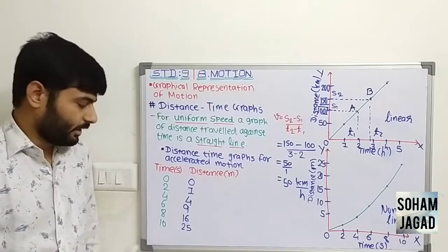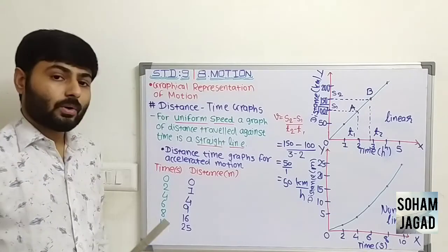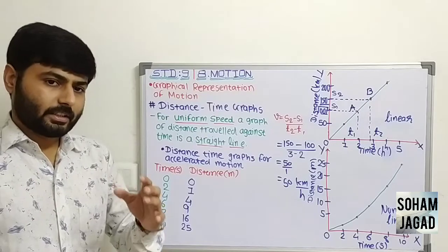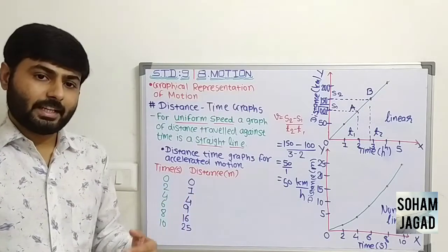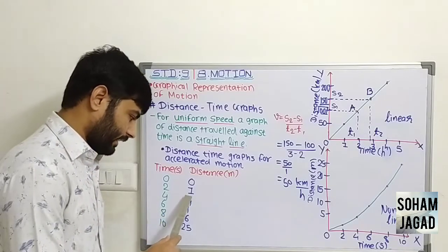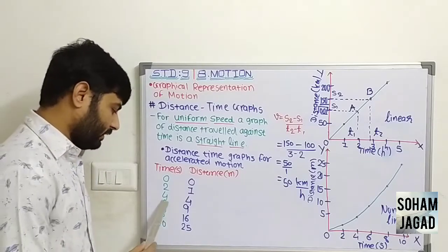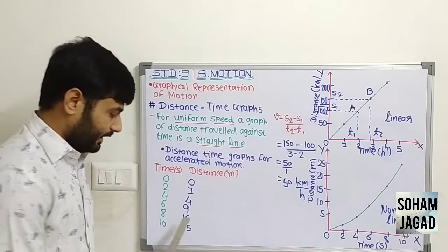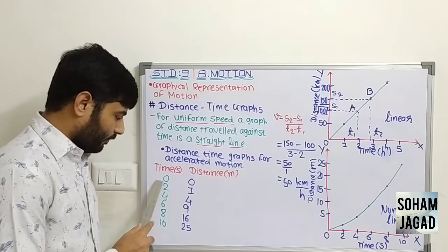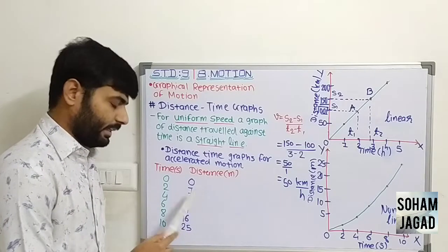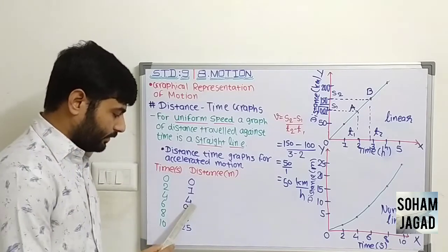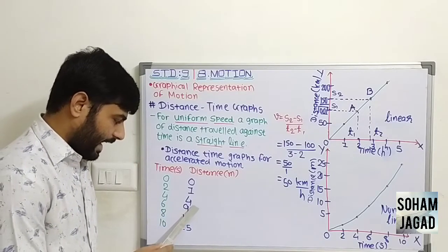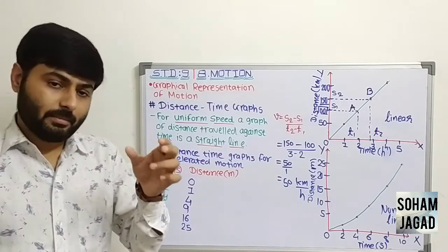The time interval here is 2 seconds: 0 to 2, 2 to 4, 4 to 6. In every 2-second interval, the object covers a different distance. At 0 seconds, the object is at 0 m; at 2 seconds, 1 m; at 4 seconds, 4 m; at 6 seconds, 9 m. So in the 1st interval it travels 1 m, in the 2nd interval 3 m, and in the 3rd interval 5 m — same time interval but distance covered is not the same.